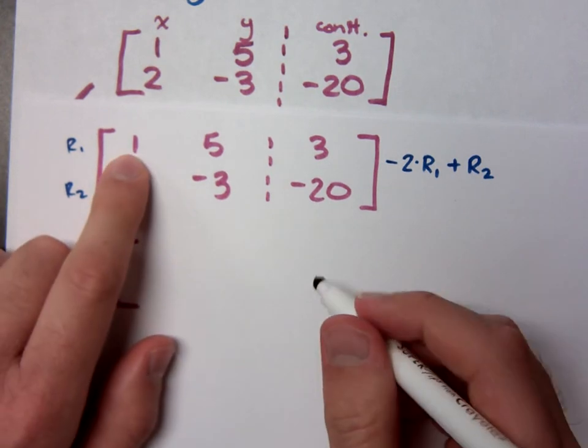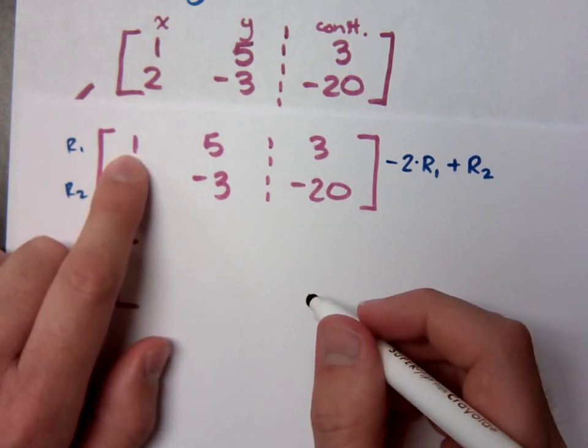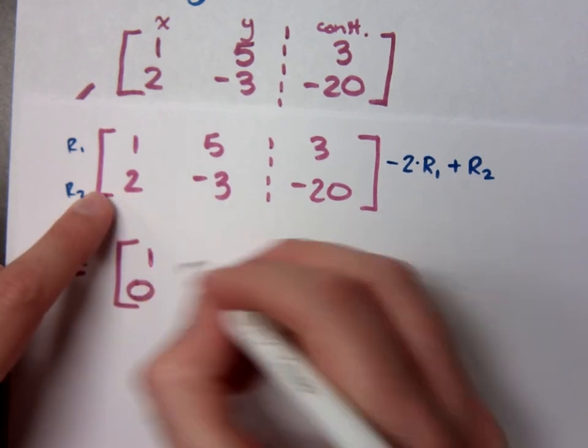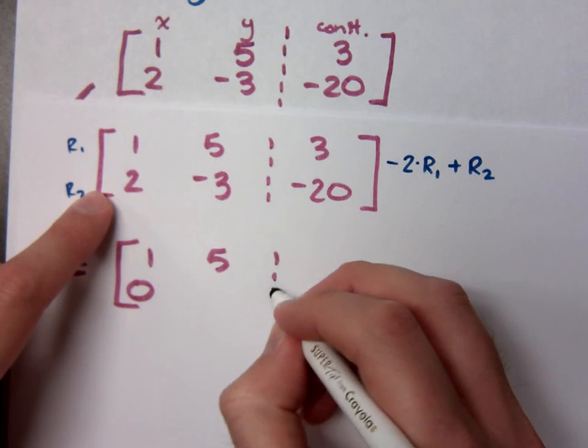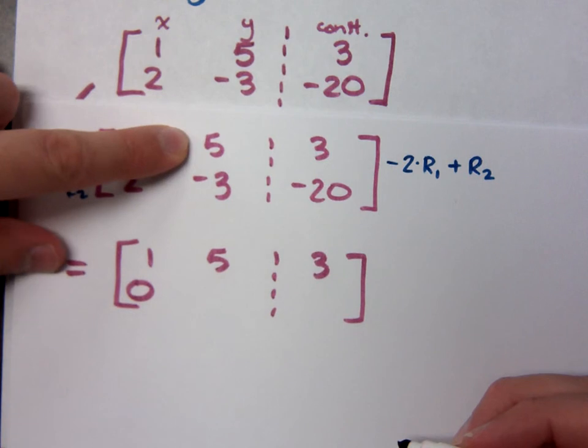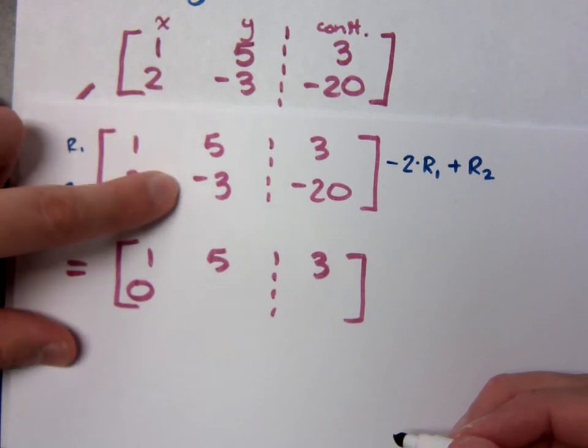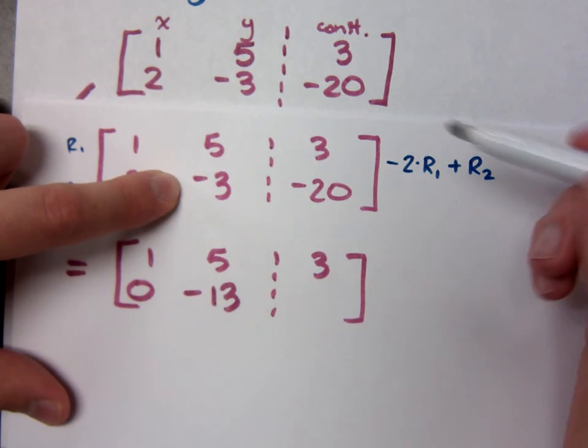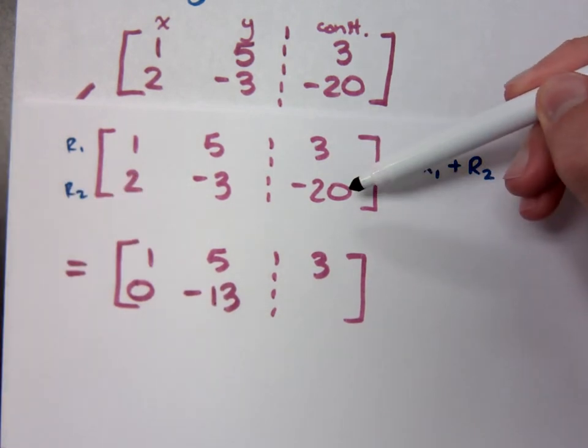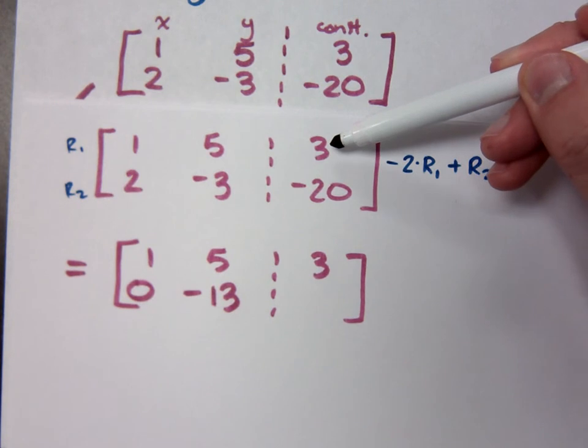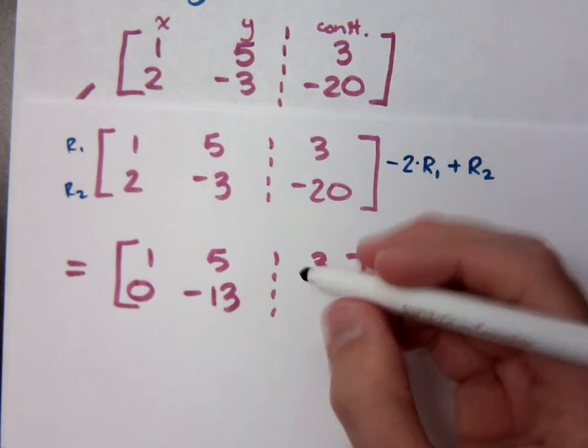If I do negative 2 times this, what do I get? And I add it here, what do you get? So that becomes zero. If I do negative 2 times this, what do you get? Negative 10 added to negative 3 is what? Do the same thing here. What's negative 2 times 3 added to this? Negative 2 times this is negative 6. Added here is negative 26.